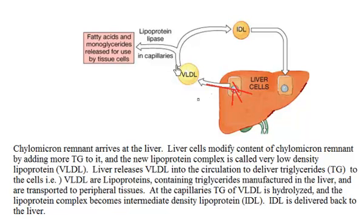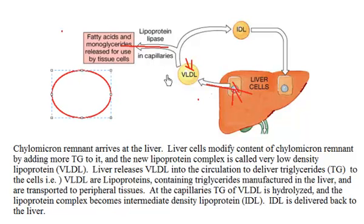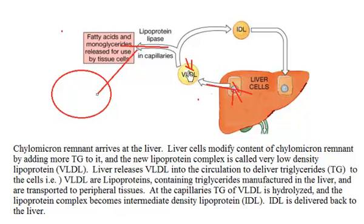As VLDL goes through the circulation through the blood vessels, lipoprotein lipase will again take some of the triglycerides from this VLDL and remove them, digesting them into free fatty acids and glycerol. The free fatty acids and glycerol will diffuse and enter the cells, where they will be metabolized to generate energy or fulfill other metabolic functions. As more and more triglycerides are removed from VLDL, the density of this lipoprotein will change.